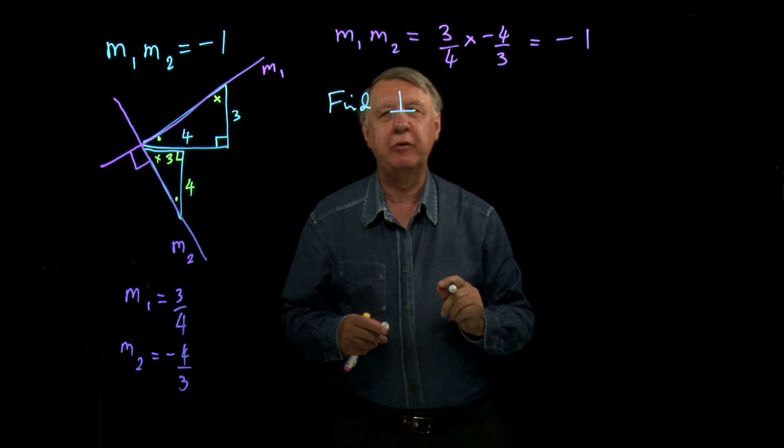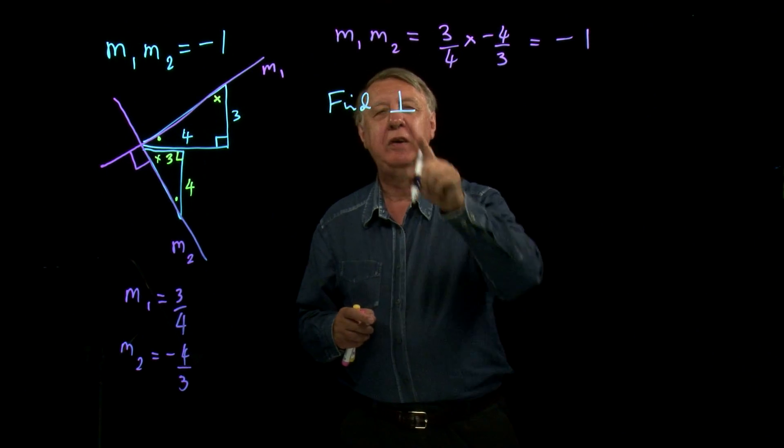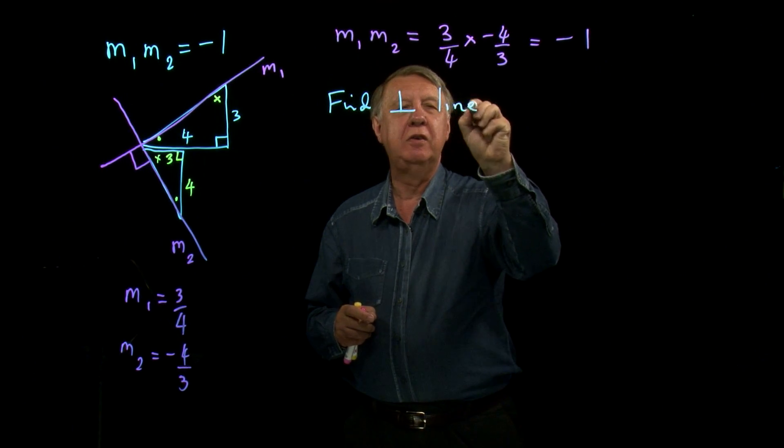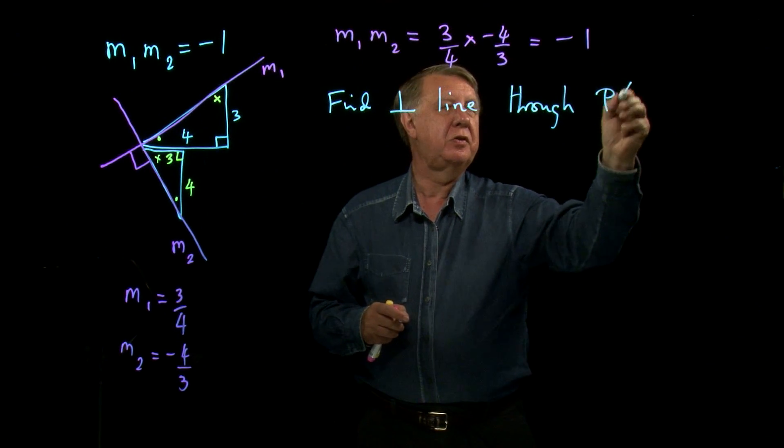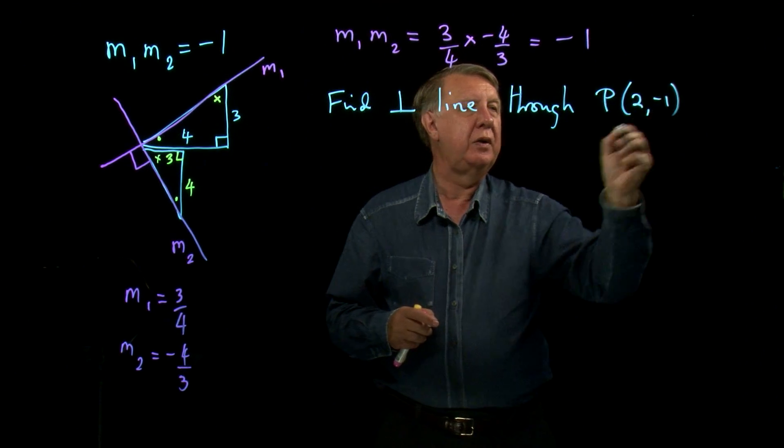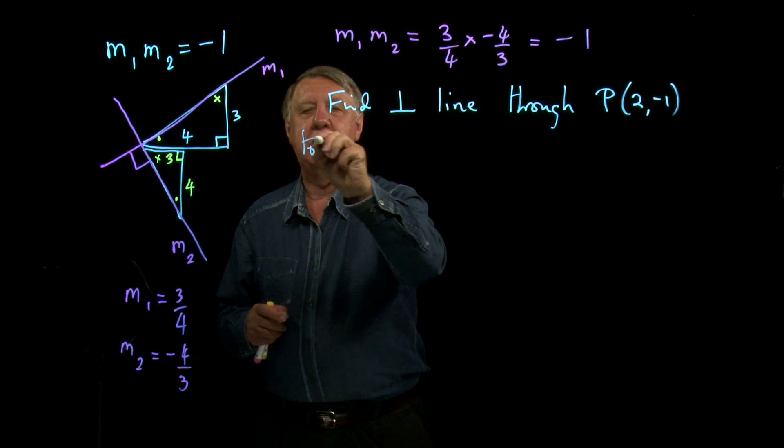Find a perpendicular line (I use that symbol for perpendicular, much quicker than writing perpendicular) through some point (2, -1) to the line 2x minus 3y equals 4.